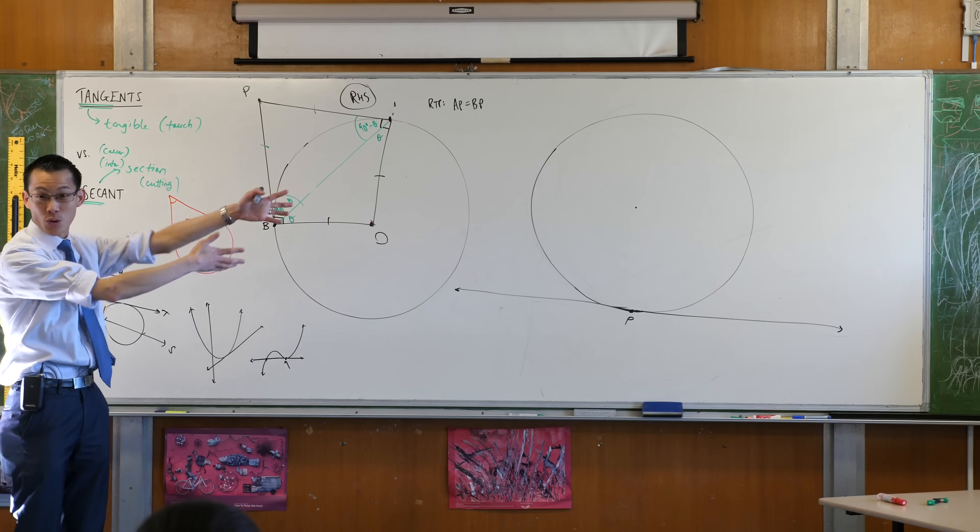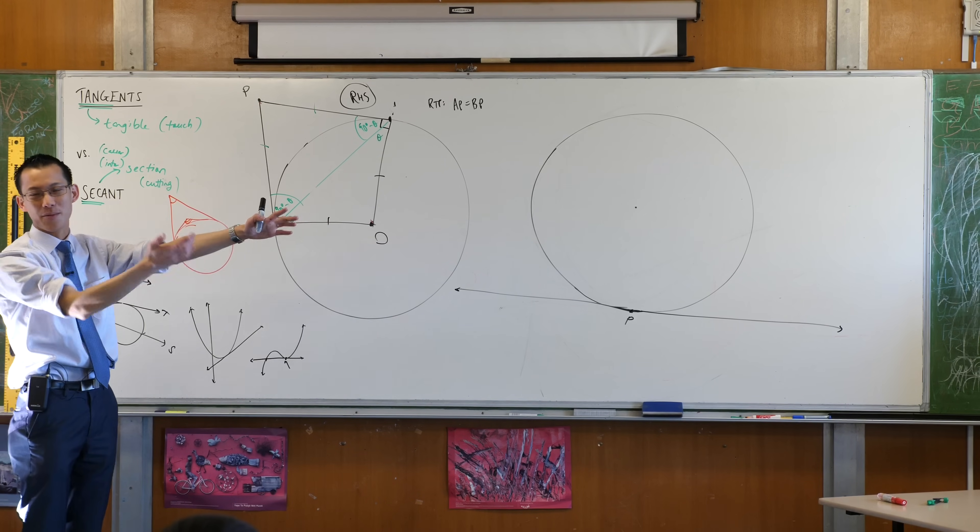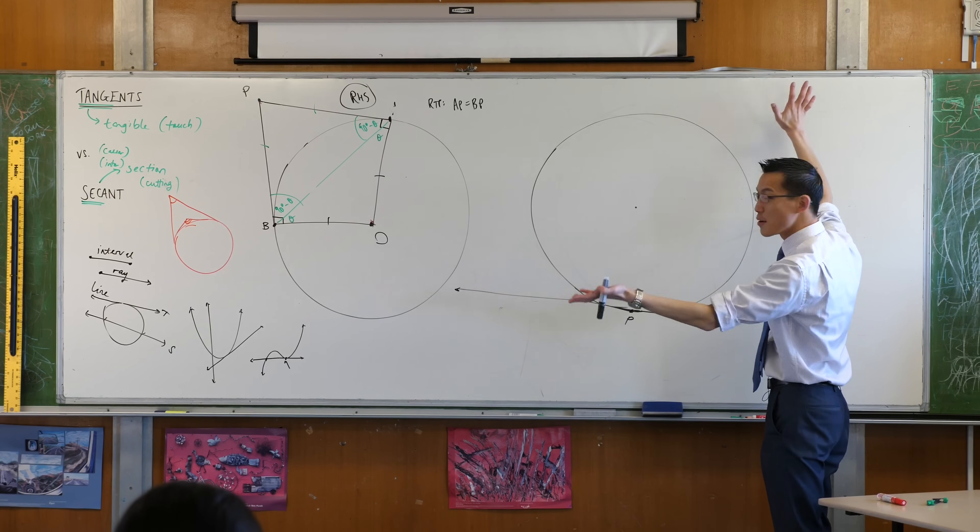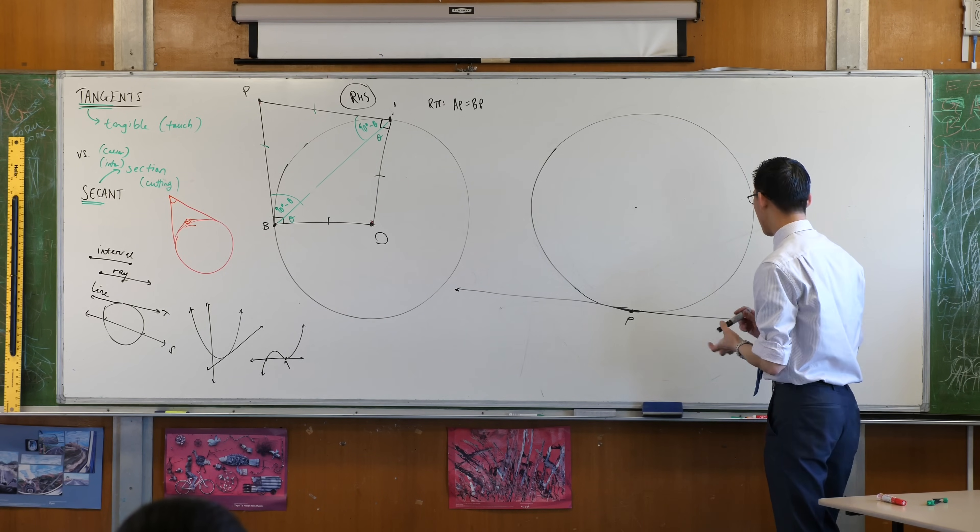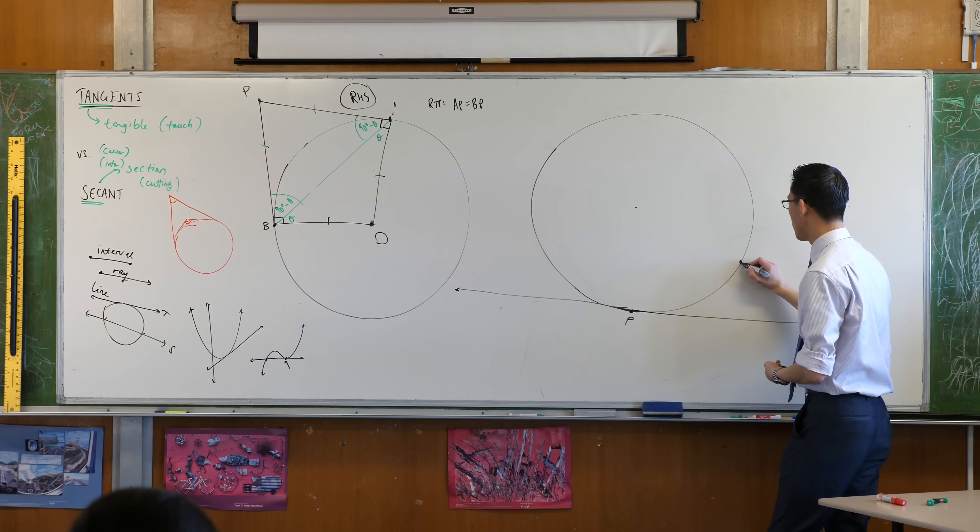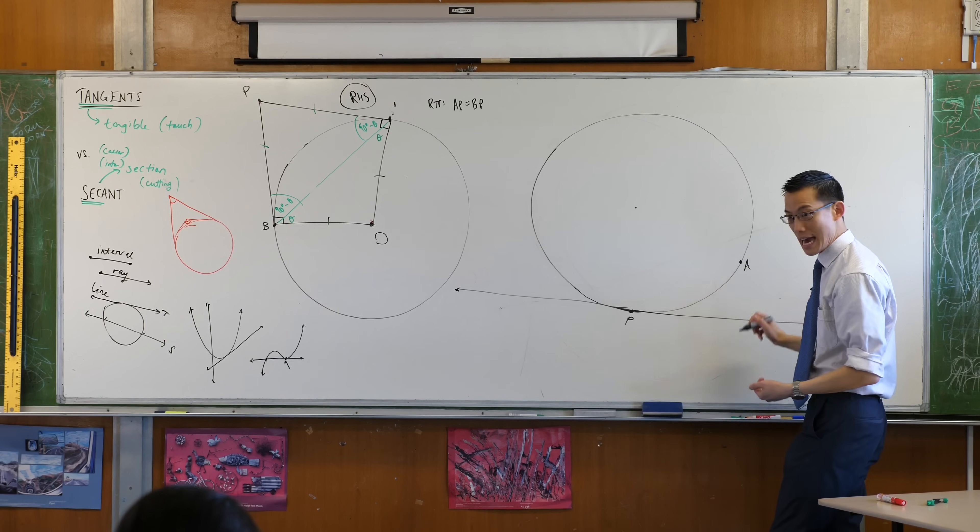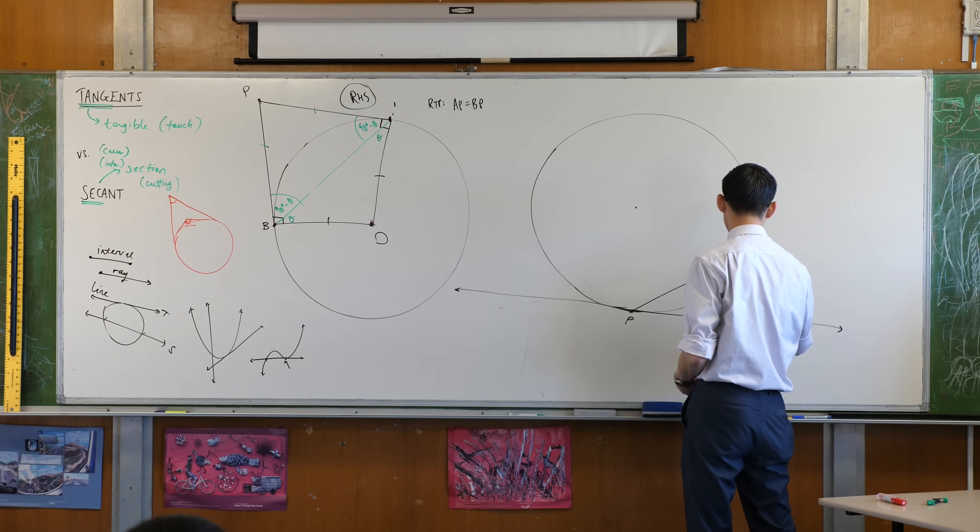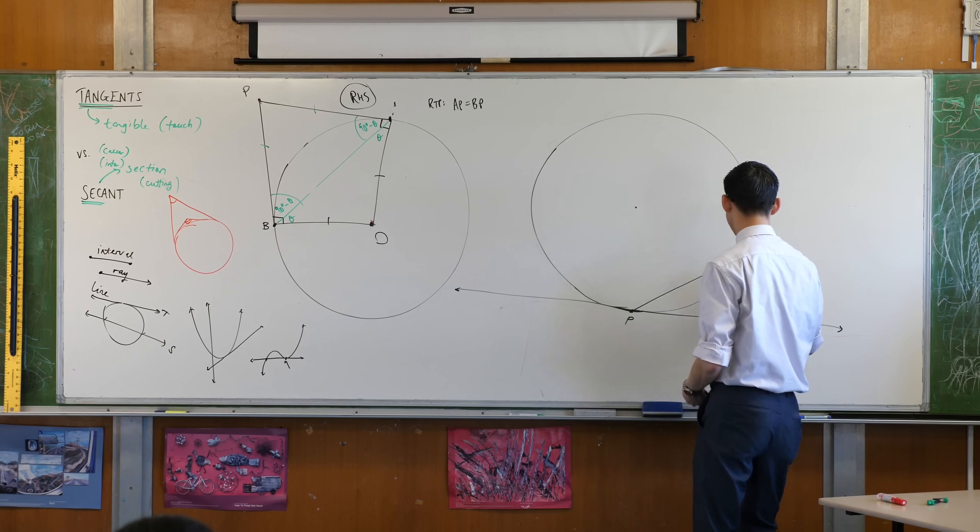That joins any two points on the circumference, okay? So I have one, so pick any, literally, any other point on the circumference. I'm going to pick one over here, for instance. Let's call this guy A and we're going to join up the chord to that point.